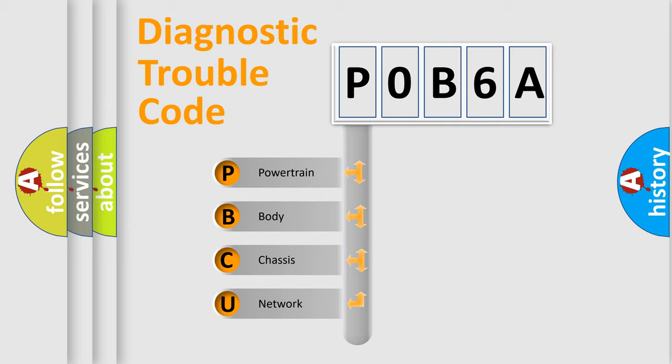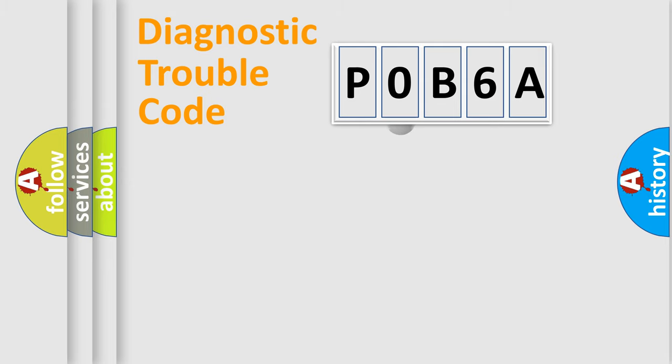We divide the electric system of an automobile into four basic units: Powertrain, Body, Chassis, and Network. This distribution is defined in the first character code.